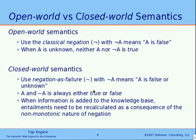So if A is unknown, then neither A nor not-A is true. While the closed world semantic uses negation as failure, with 'not A' meaning that A is false or unknown — basically, 'not A' means A is believed to be false. So A and not-A is always either true or false. As a consequence, when information is added to the knowledge base, some logical entailments need to be adjusted to take consideration of the new information, because what was believed to be false could now be found to be true — which is a consequence of the non-monotonic nature of negation.